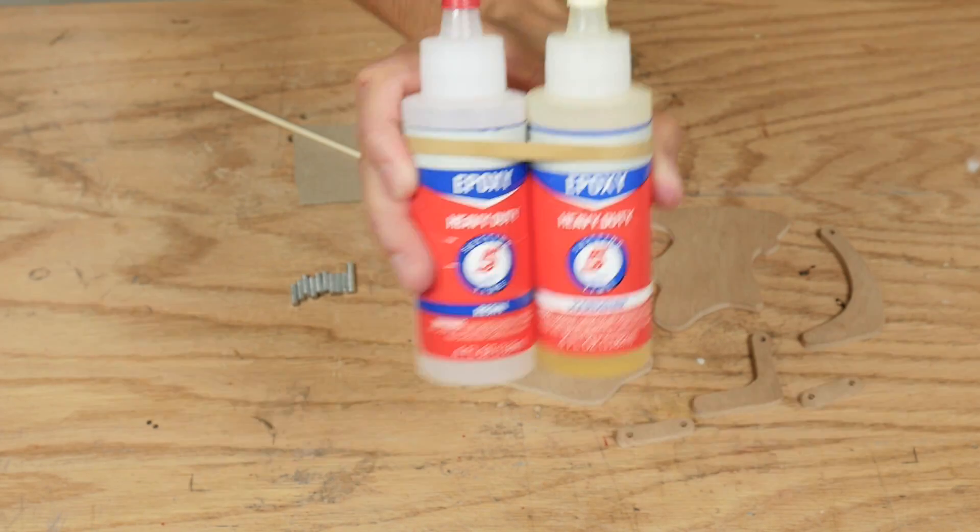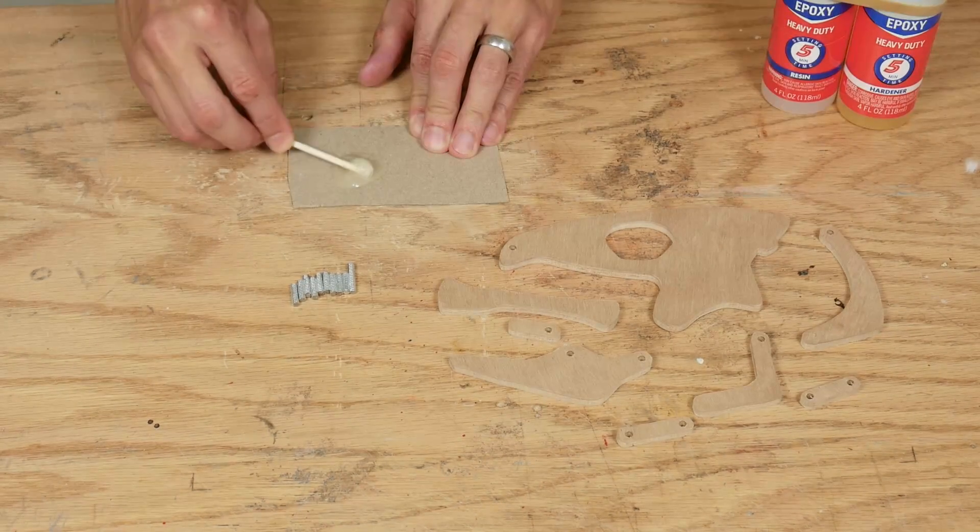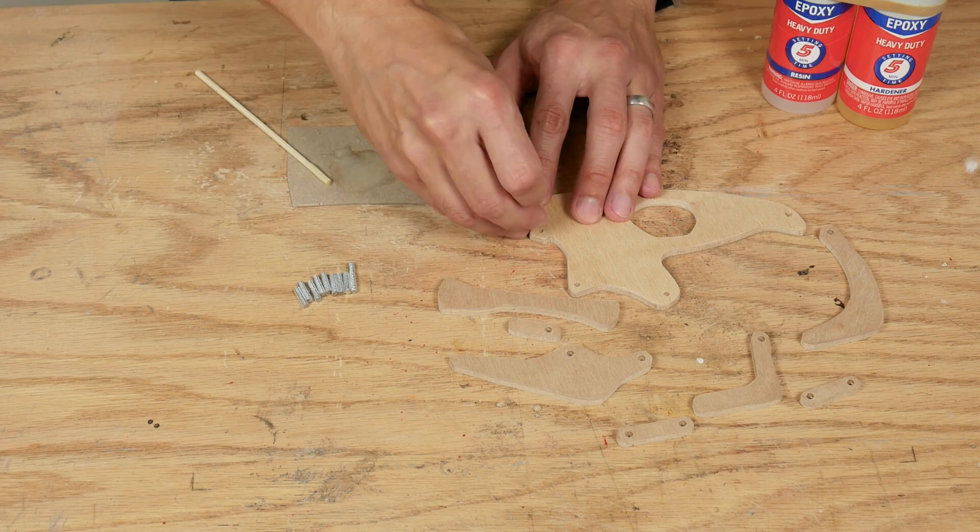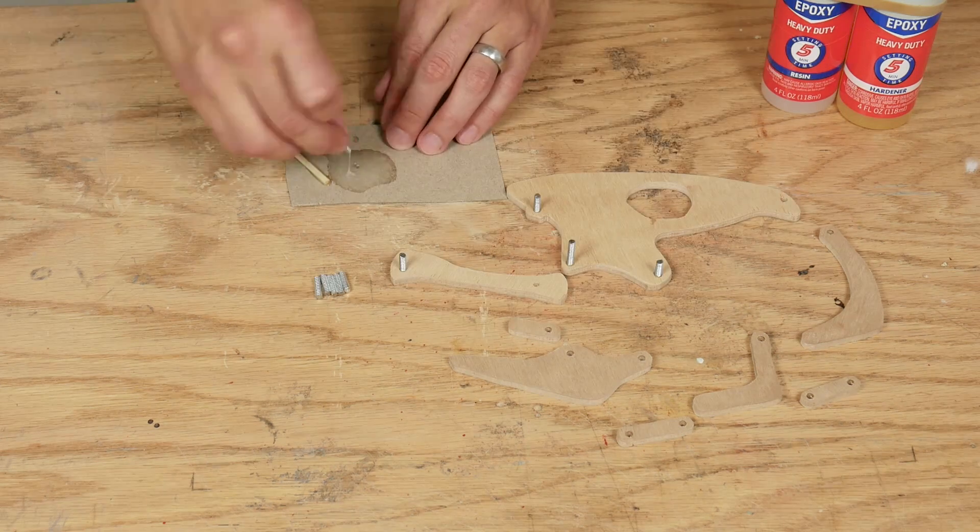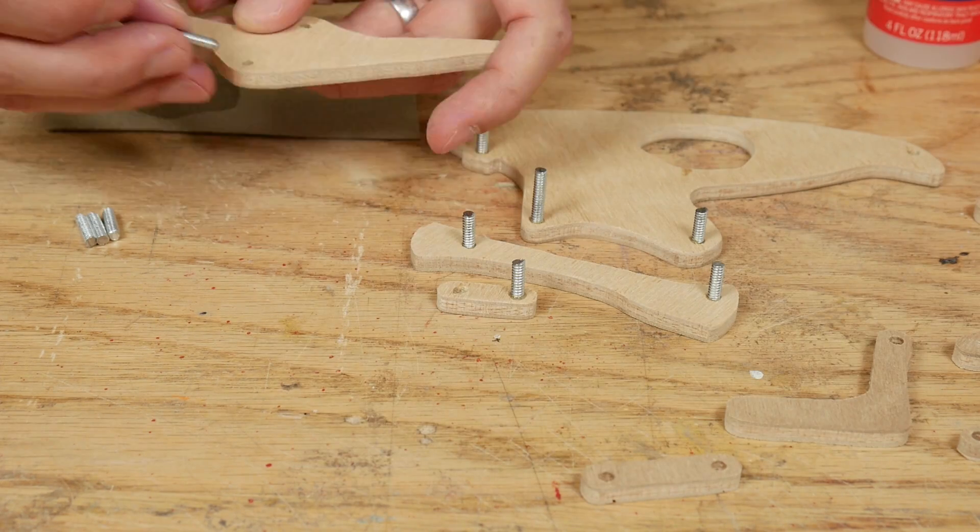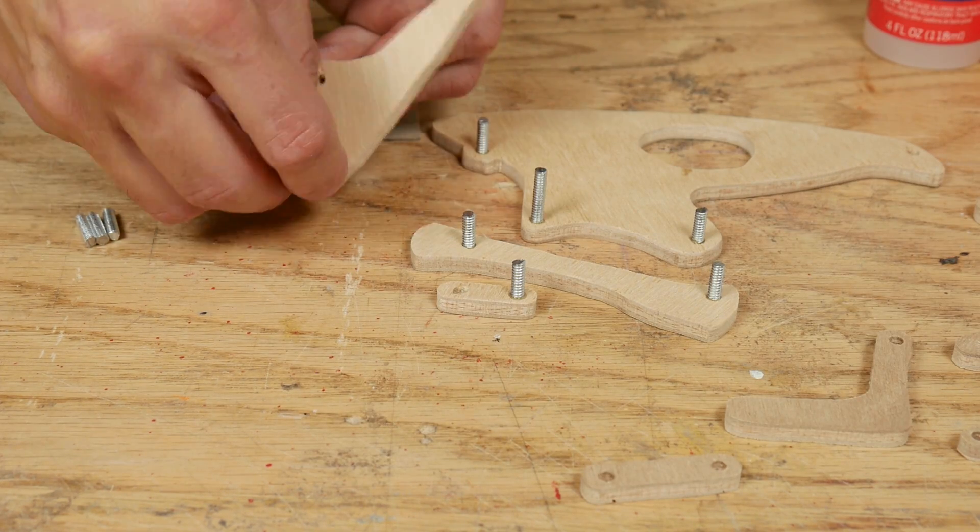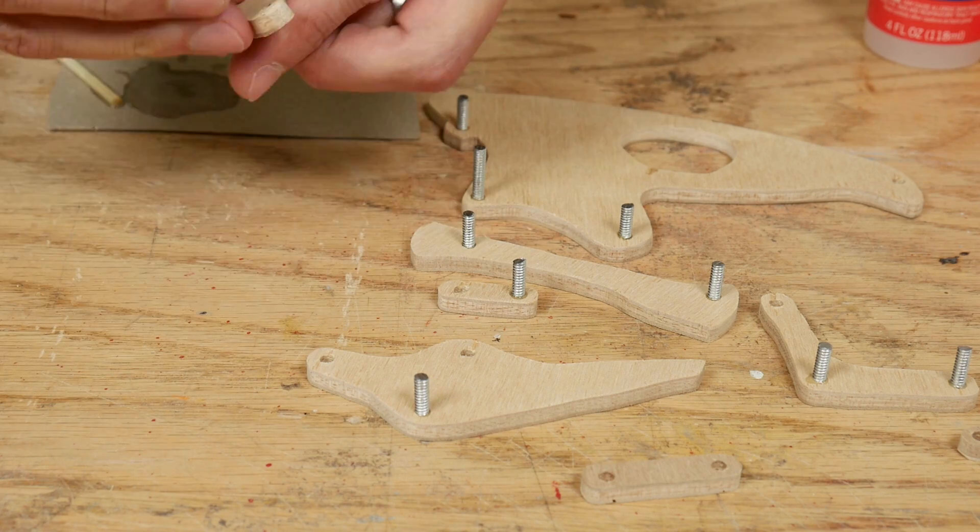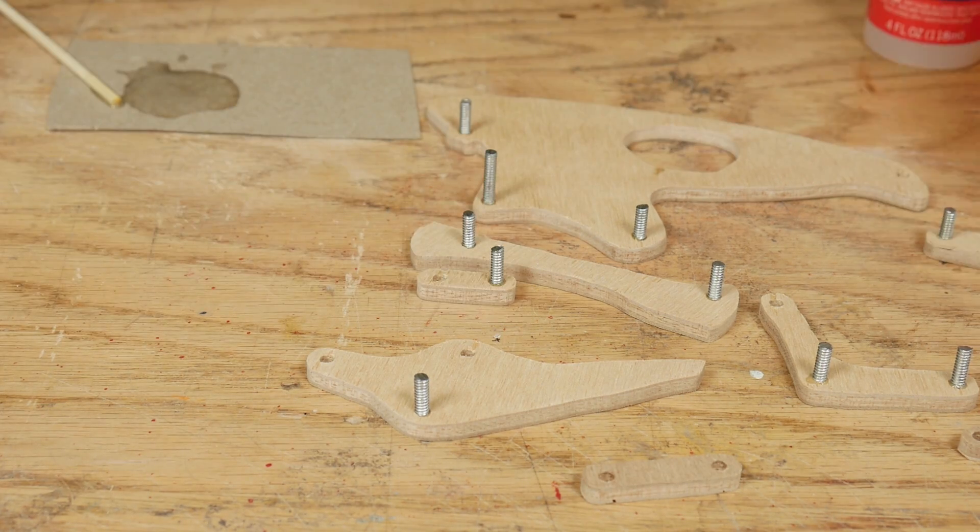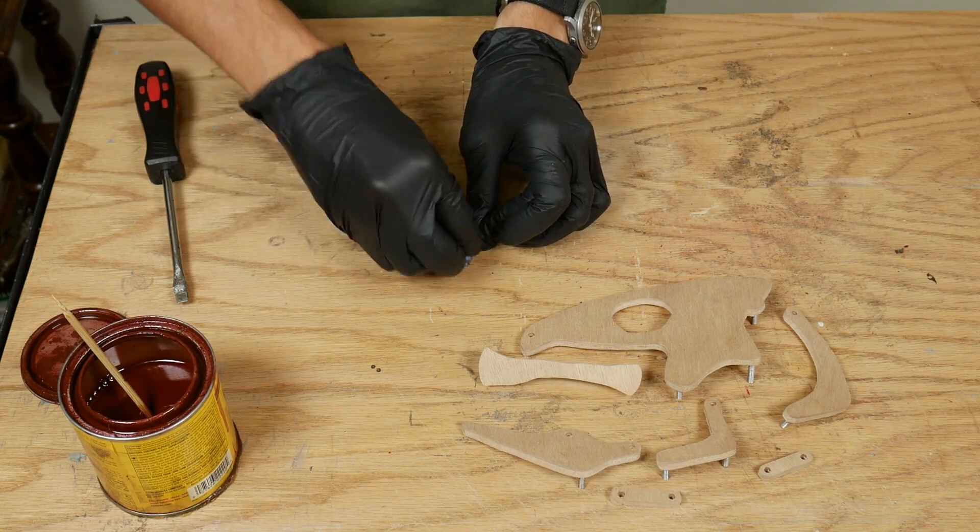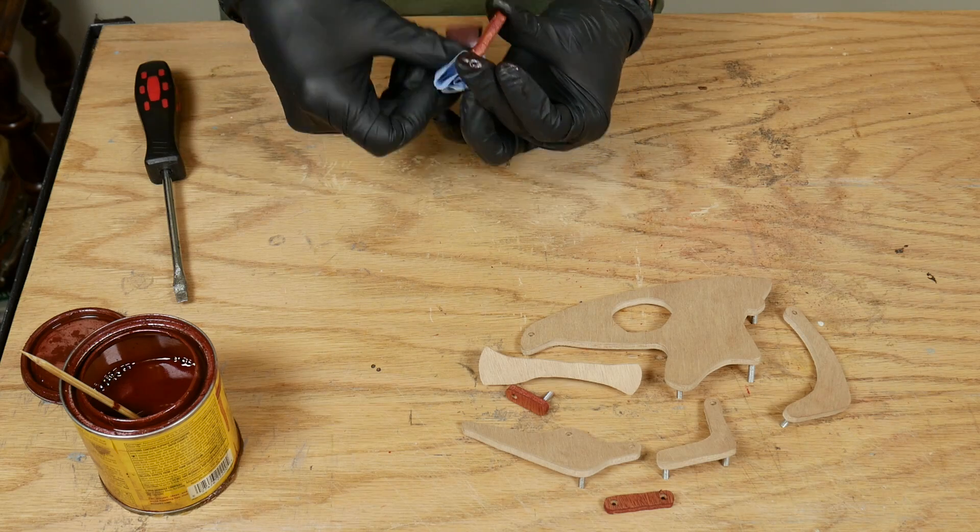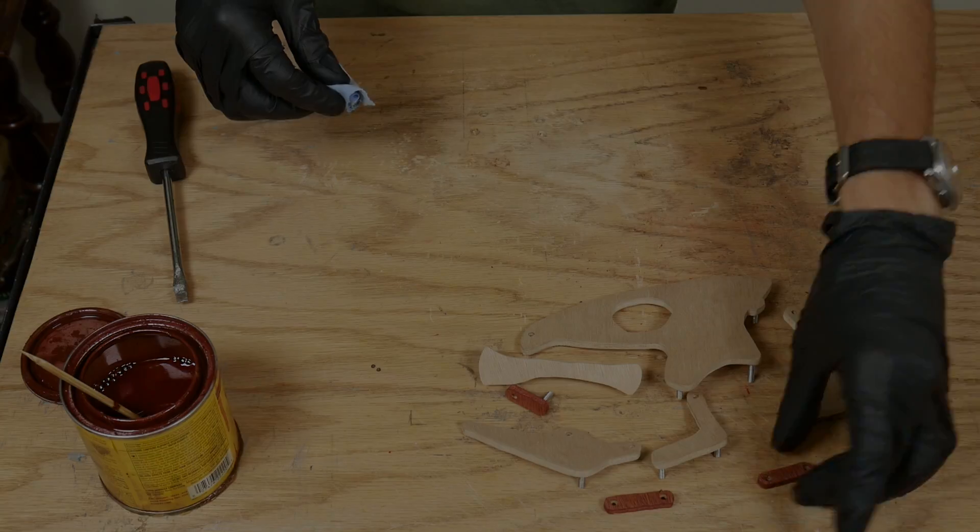I mixed up some quick setting epoxy and epoxied the threaded rods into the shallow holes. The three quarter inch rod went into the hole where the hyomandibula meets the hyoid. I stained the ligament and the muscles to differentiate them from the bony components and I let them dry.